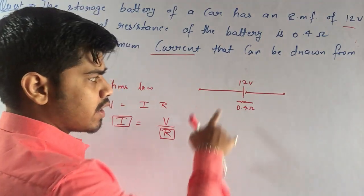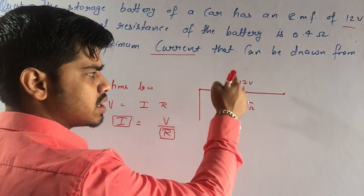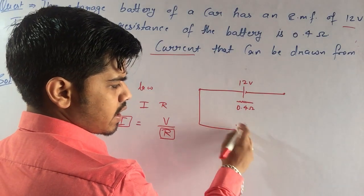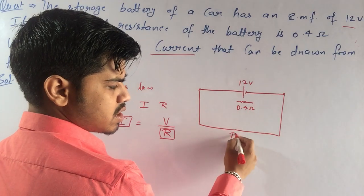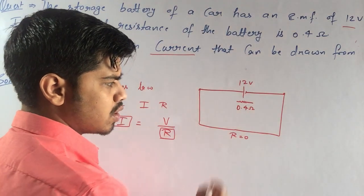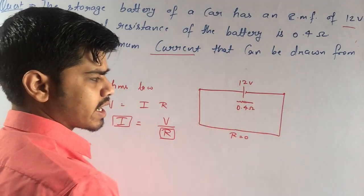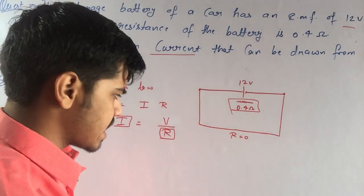The condition in which this cell gives maximum current is when the external resistance is equal to 0, meaning the total circuit resistance is equal to the internal resistance of that cell.